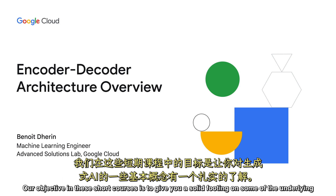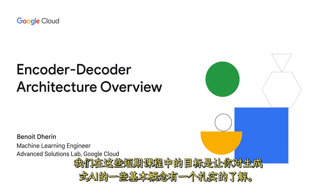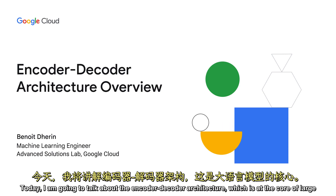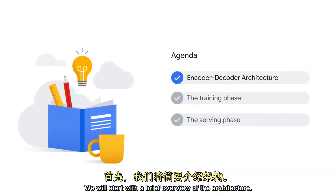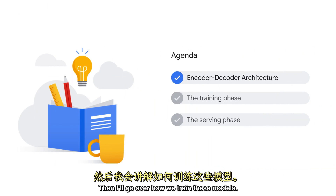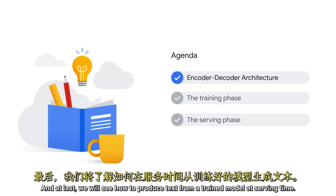Our objective in these short courses is to give you a solid footing on some of the underlying concepts that make all the Gen AI magic possible. Today I'm going to talk about the encoder-decoder architecture, which is at the core of large language models. We will start with a brief overview of the architecture, then I'll go over how we train these models, and at last we will see how to produce text from a trained model at serving time.